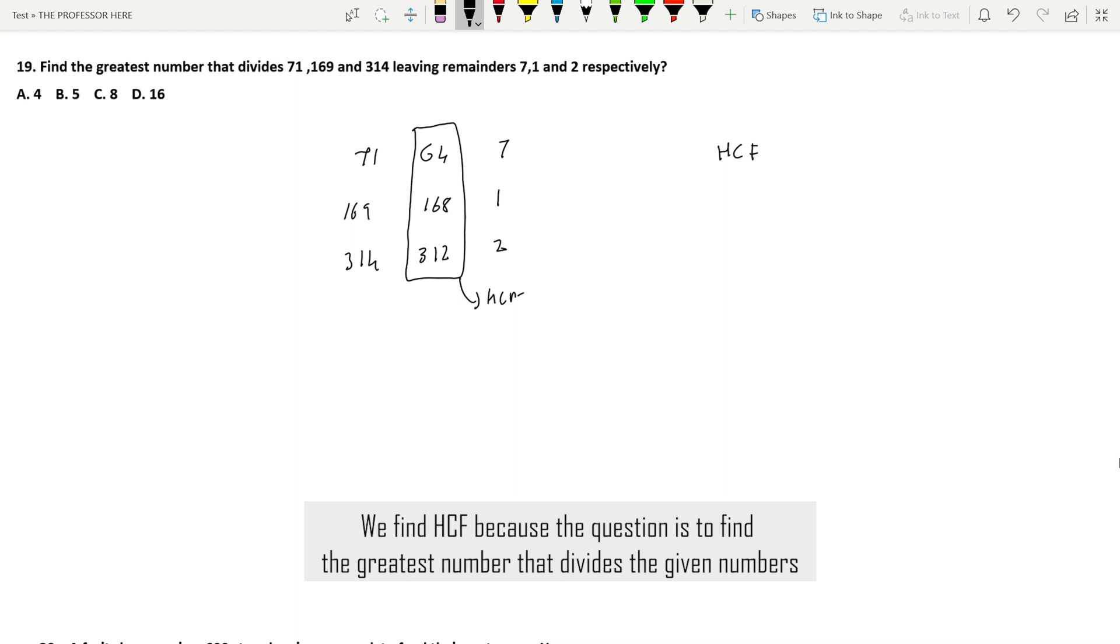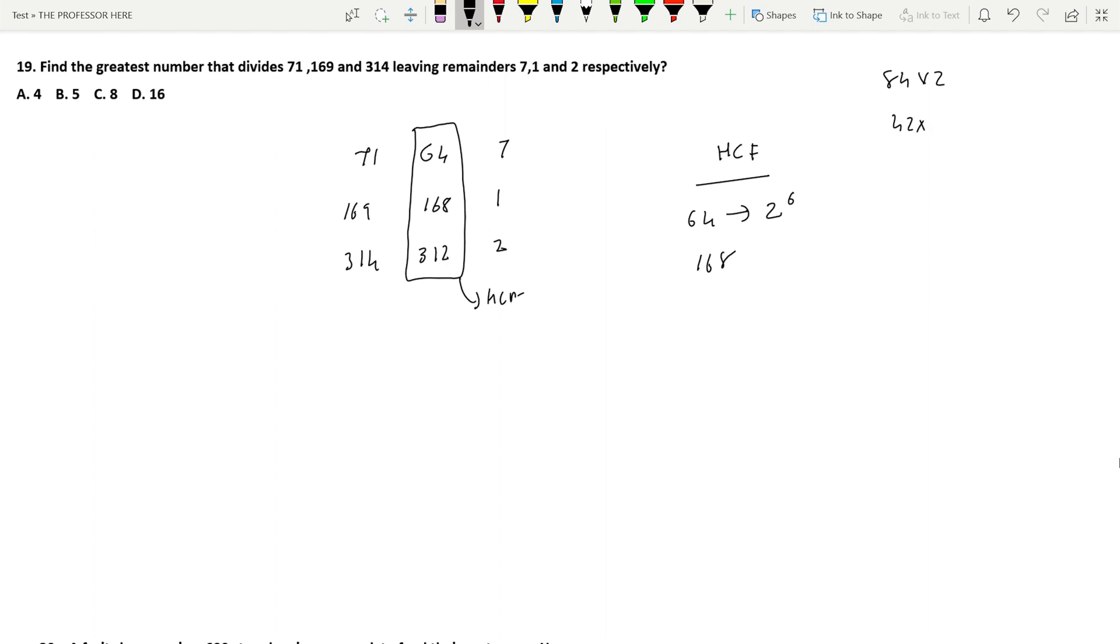So to find the HCF of these three numbers: 64 is 8 × 8, which is 2³ × 2³ = 2⁶. 168 can be written as 84 × 2, 42 × 4, 21 × 8, 7 × 3 × 8, so 2³ × 3 × 7. Last number is 312, which is 156 × 2, 78 × 4, 39 × 8, or 13 × 3 × 8, so 2³ × 3 × 13.